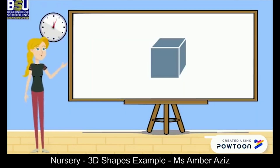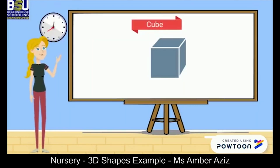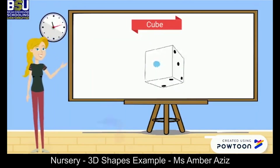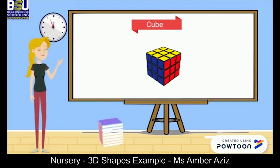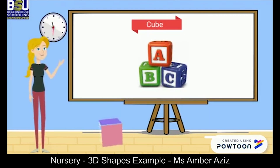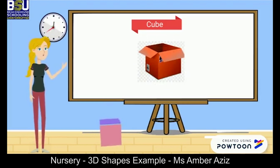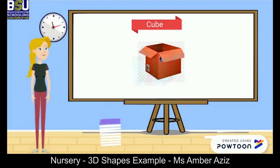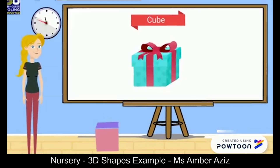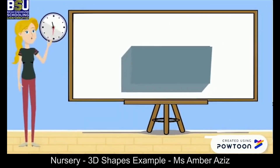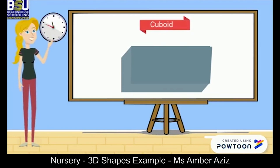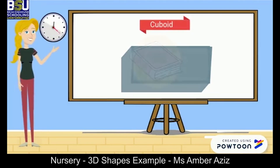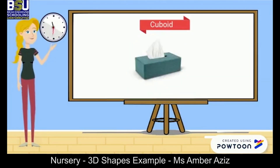Do you know which shape this is? It's a cube! Dice and Rubik's cube are examples of a cube. Have a look at some other examples. Can you guess this shape? It's a cuboid! Look at the examples of cuboid shapes around us.